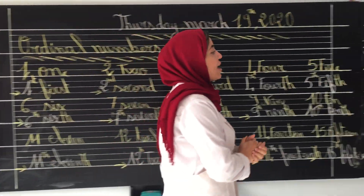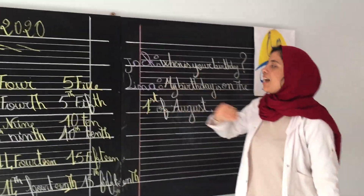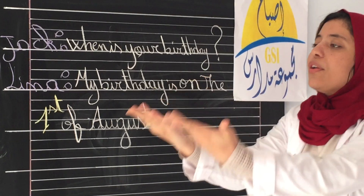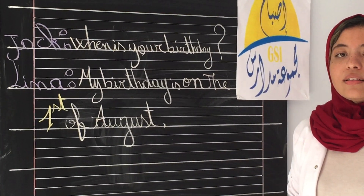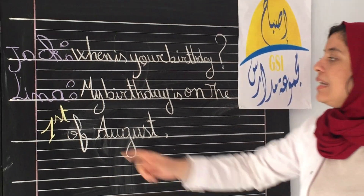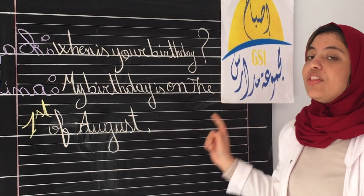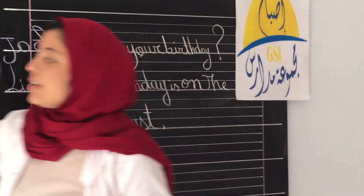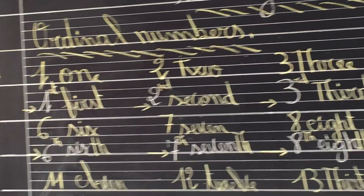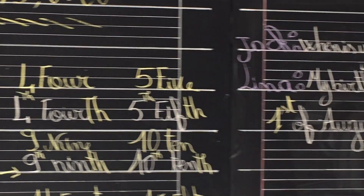Let's move to the dialogue. Here we have Jack and Lina. Jack asks: when is your birthday? Lina answers: my birthday is on the 1st of August.